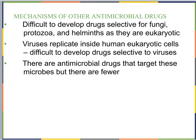First, we're going to talk about antifungals. The reason these are separate is that when making antibiotics for bacteria, bacteria have a lot of different structures compared to our eukaryotic cells. However, it is difficult to develop drugs that are selective for fungi, protozoa, and helminths, because they are eukaryotic just like we are. So it's very difficult to make something that will effectively kill the pathogen without killing our cells.